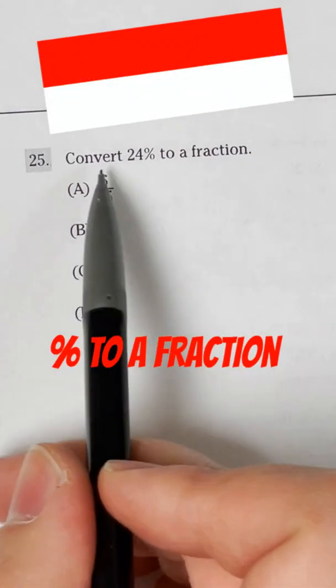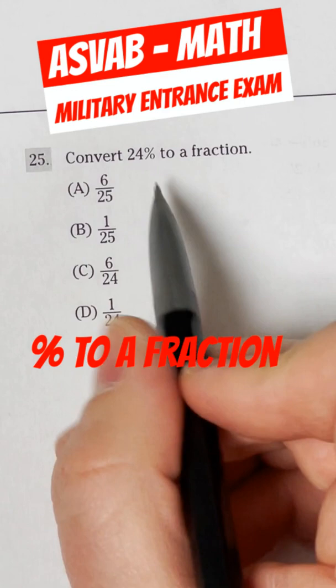Number 25 on the ASVAB says convert 24% to a fraction. So the easiest way to go about converting percents to fractions is you just put that number over 100.